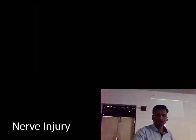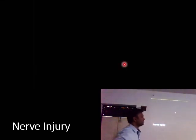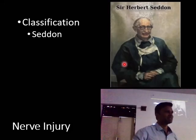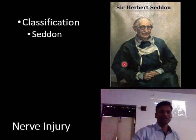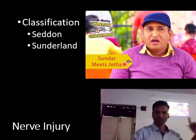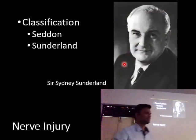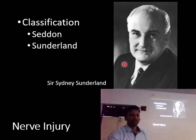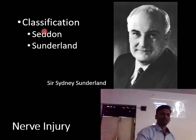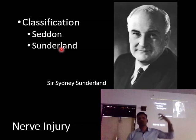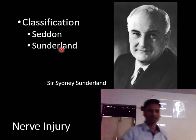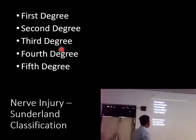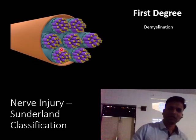Now that you understand Wallerian degeneration, we'll talk about different classifications. We have two types: Seddon's classification, given by Sir Herbert Seddon, and Sunderland's classification, given by Sir Sydney Sunderland. Rather than the usual order, we'll cover Sunderland's classification first, which has first through fifth degrees of injury.